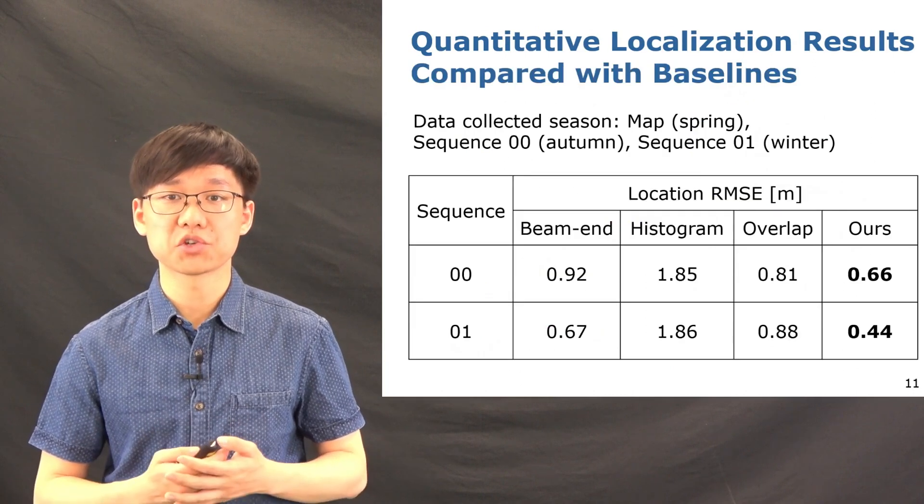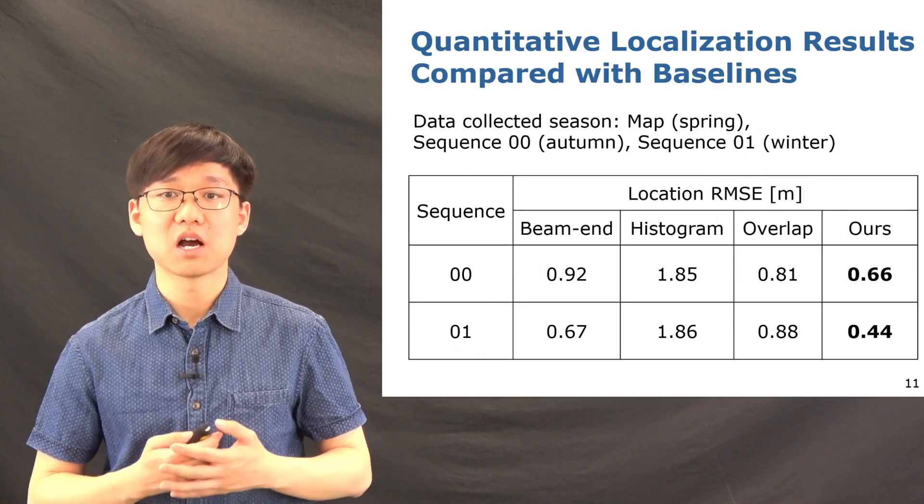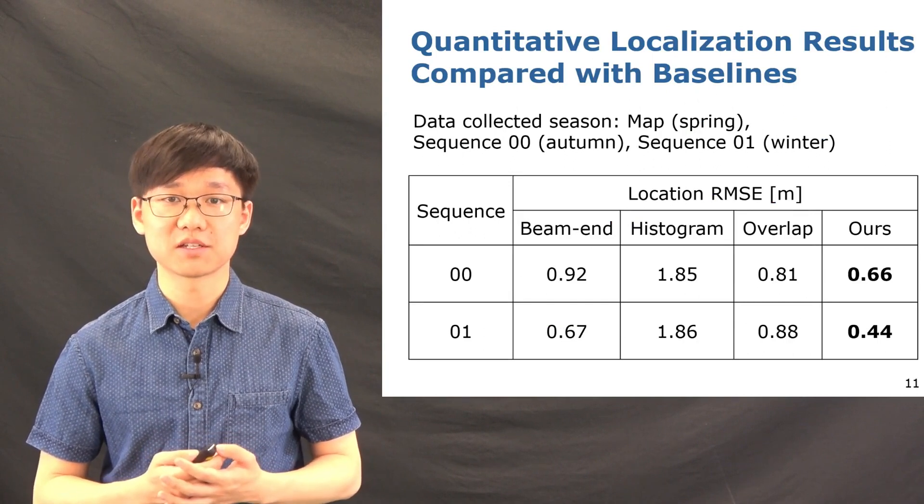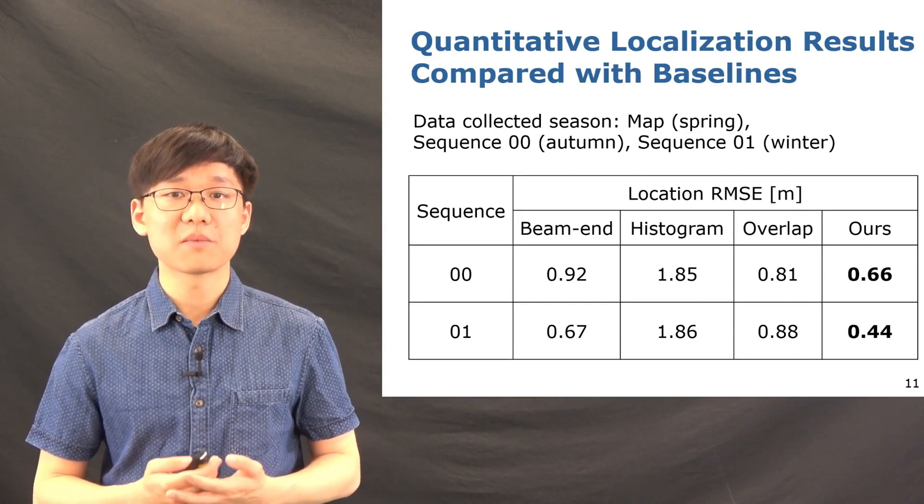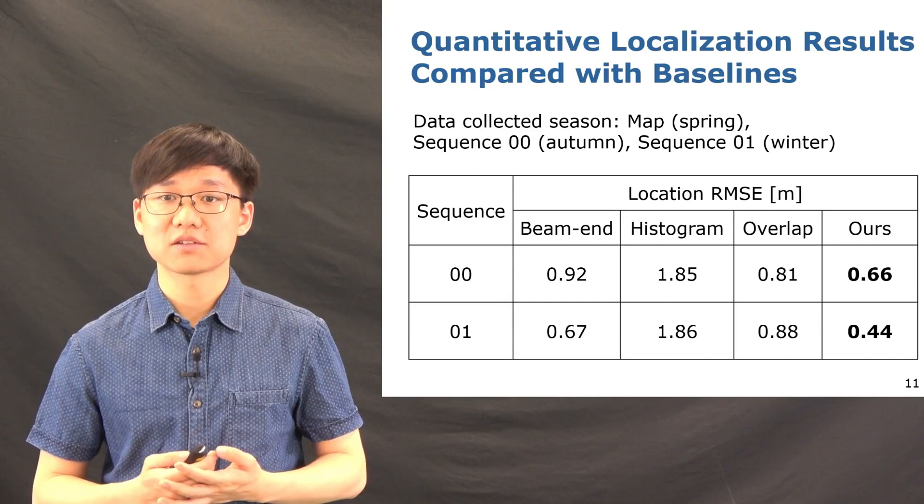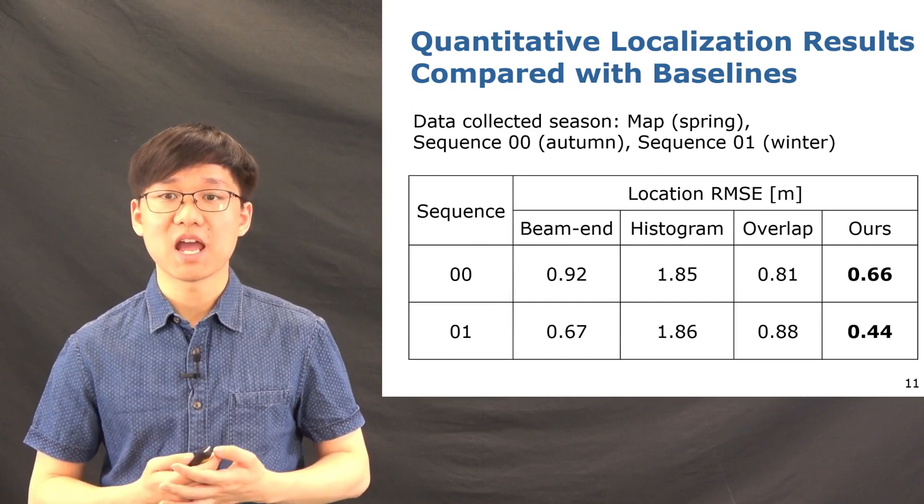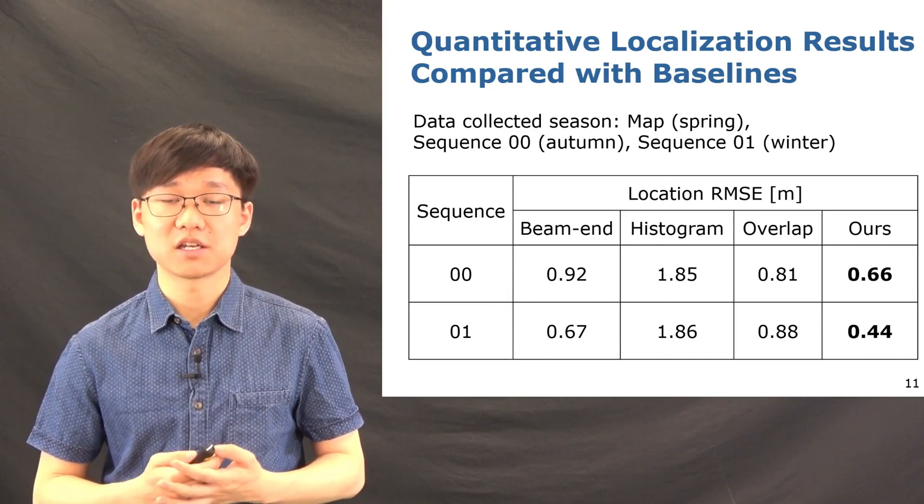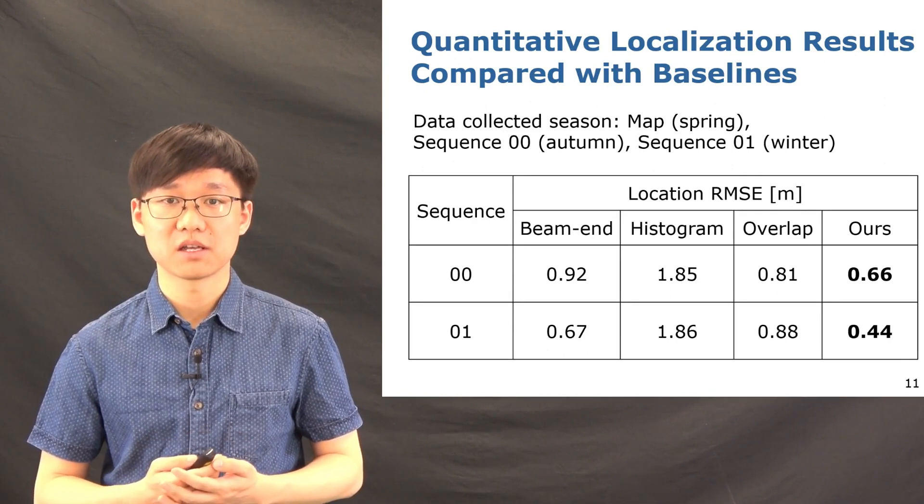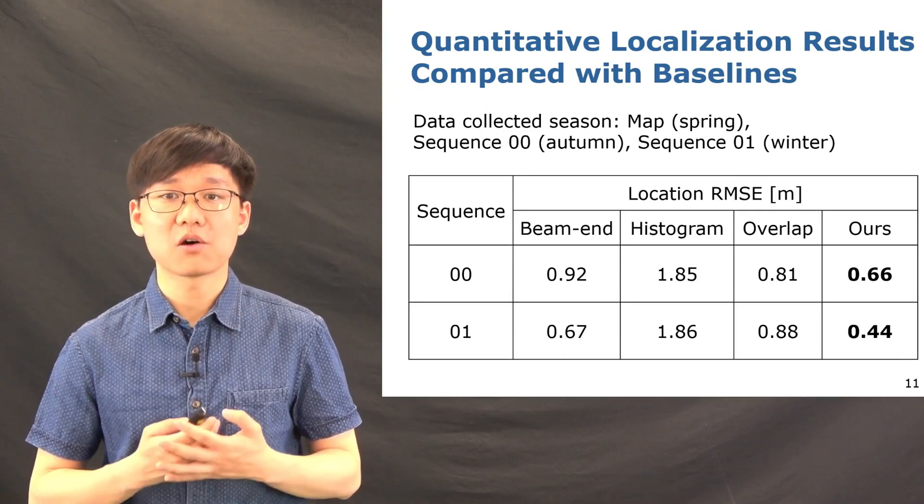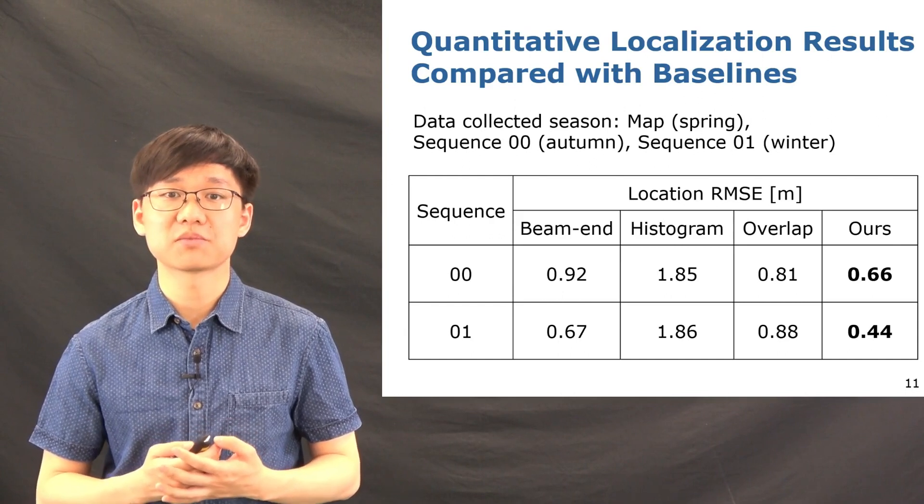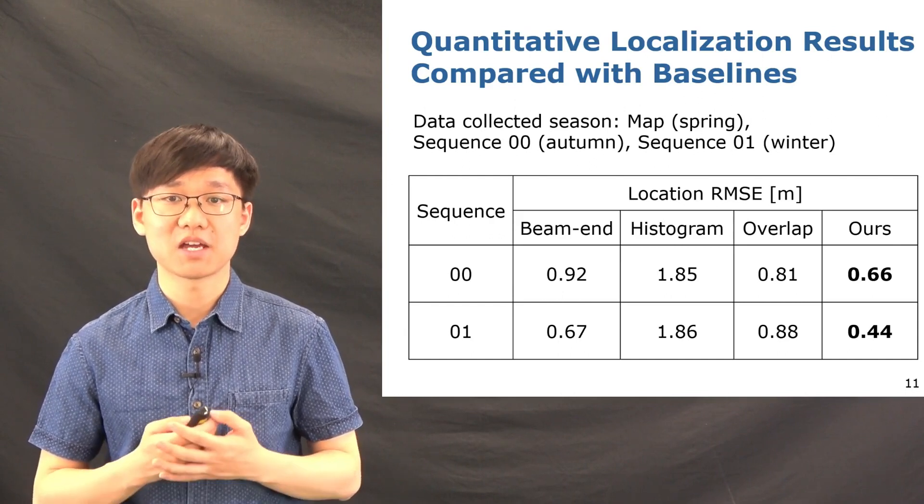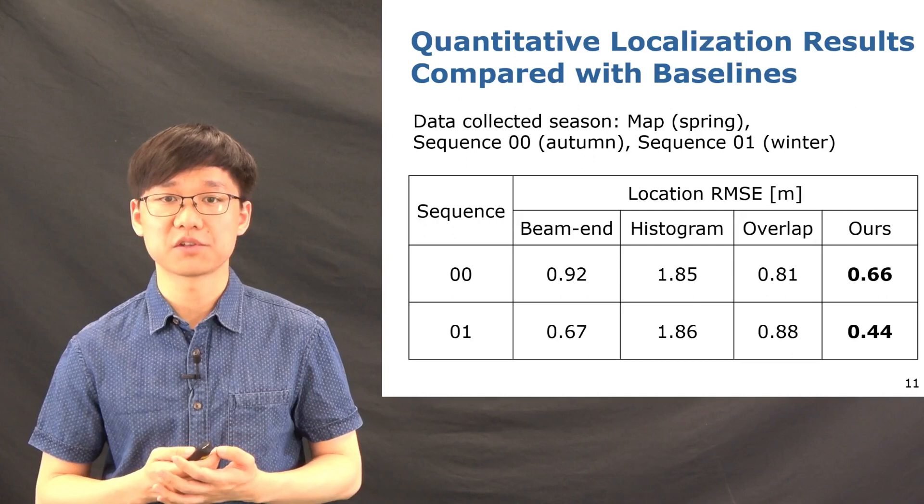Here we also show the quantitative results of using our localization system over different seasons. We built our map using the LiDAR scans collected in spring, and test it with the data collected in autumn and in winter. And as can be seen, our methods outperform other baselines in terms of localization accuracy, and has good generalization over different seasons.